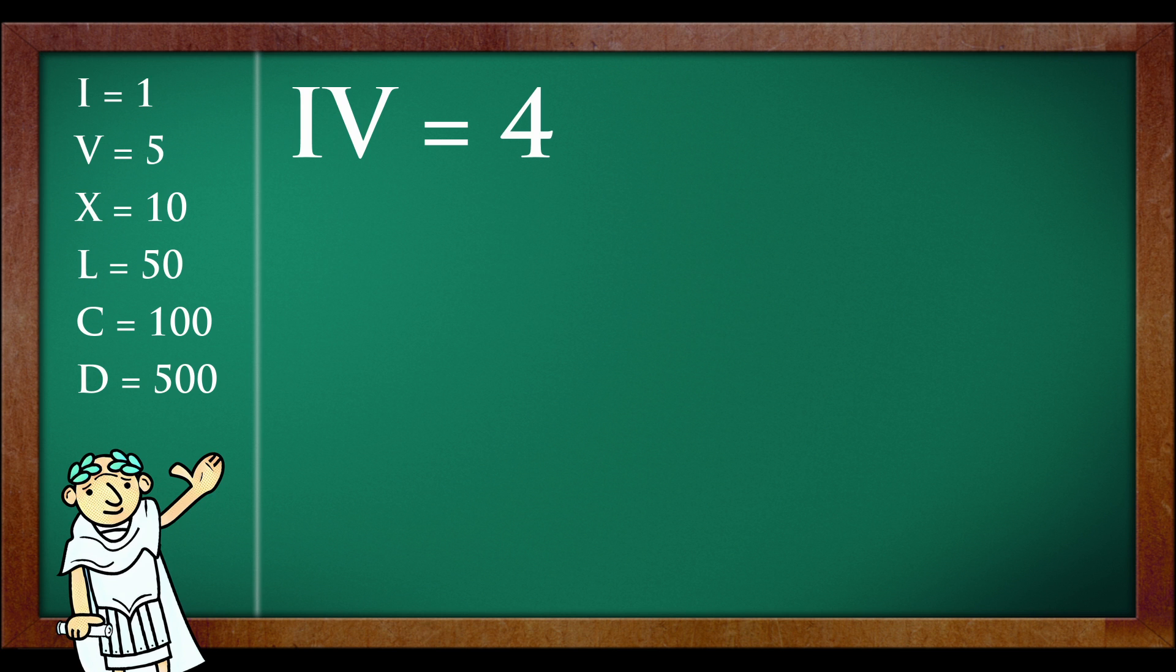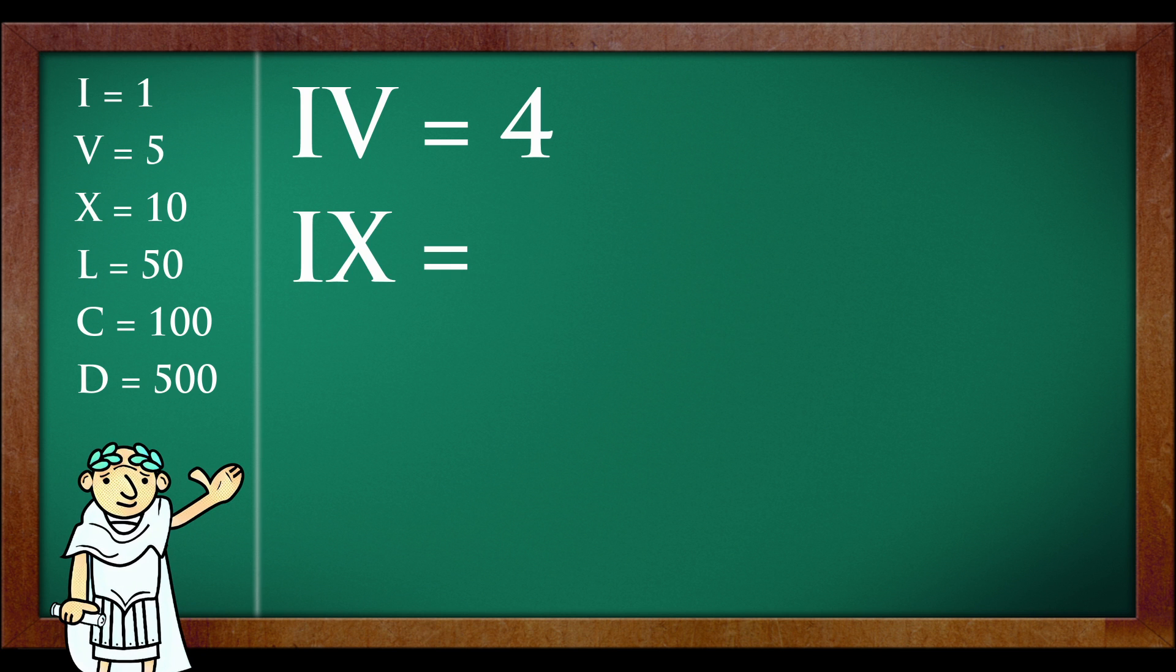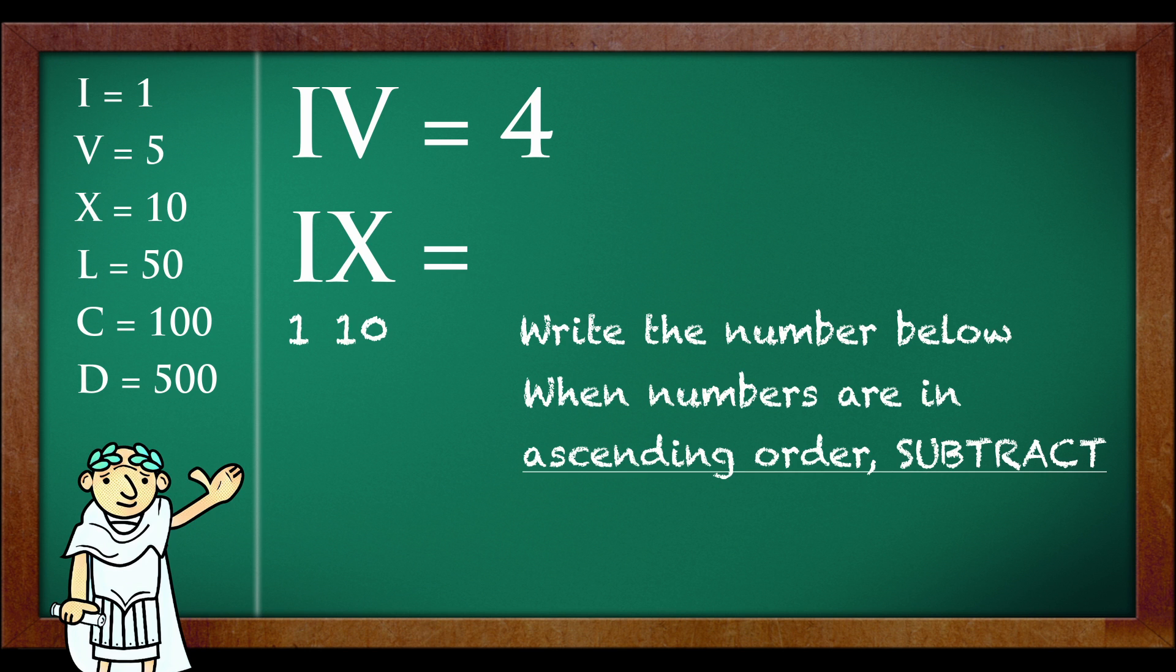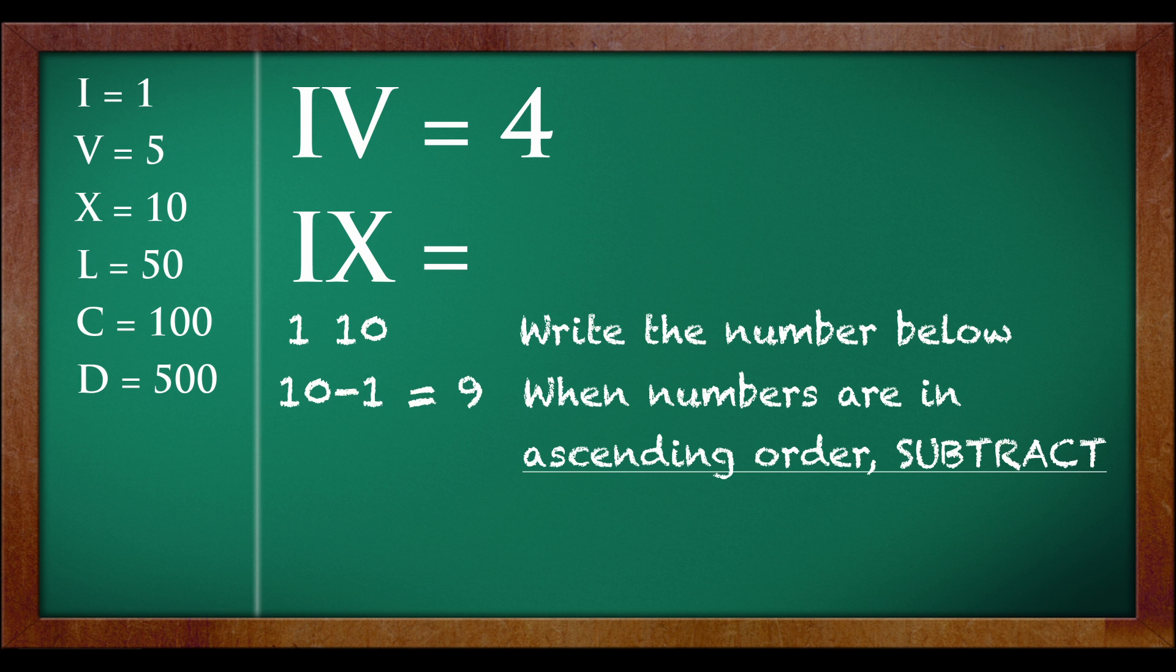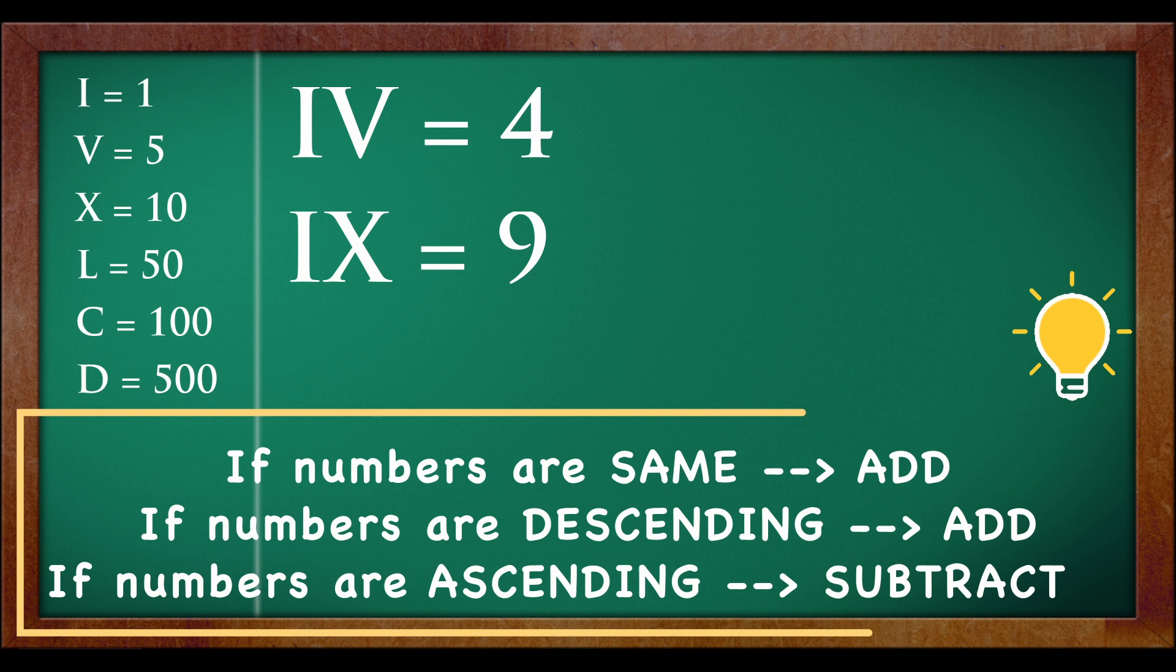Now let's jump to 9. 9 is IX. I'll tell you why. First write the numbers below, 1 and 10. Similarly with 4, 10 minus 1 is equal to 9. So in summary, if numbers are same or in descending order, you should add. If ascending order, subtract.